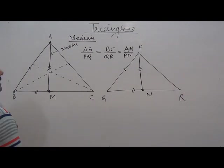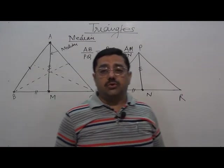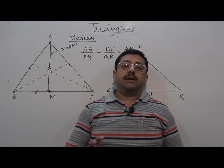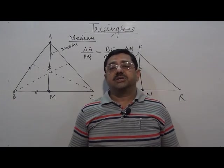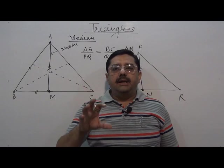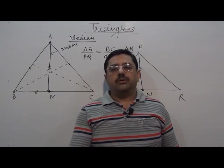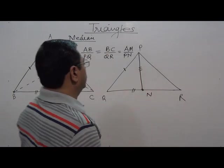We have to prove two triangles are similar. Reverse is also true - that if the two triangles are similar, then their medians will be in proportion.